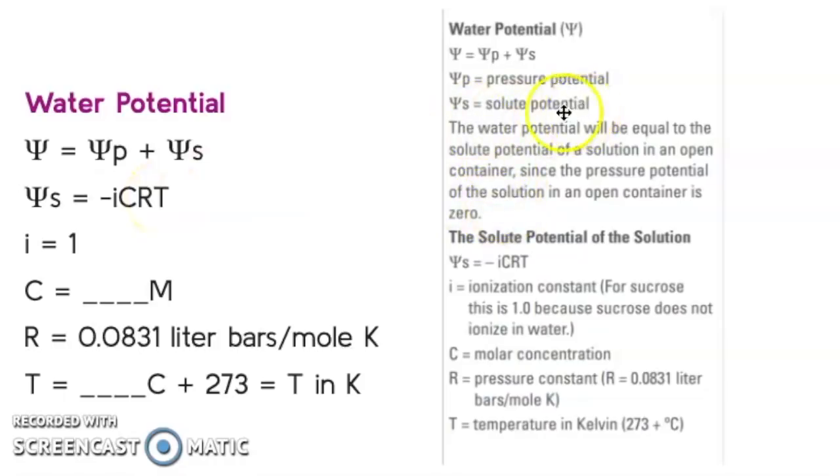All you do is multiply all these values together—negative I, which is 1, our molar concentration, our R constant, and then our temperature. Generally, our solute potential is going to be the same as our overall water potential because if it's an open container, our pressure potential is going to be zero. This says this on the formula sheet as well. You might want to do a few practice problems to refresh if you need to.